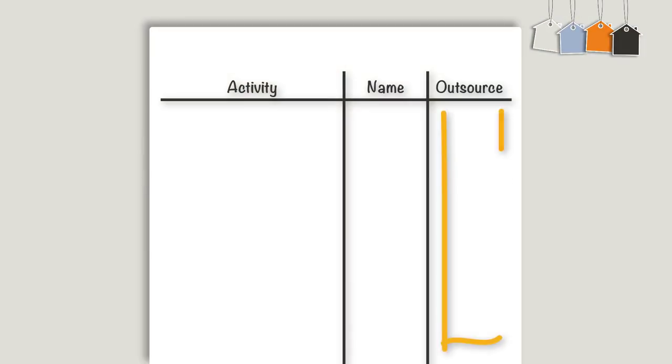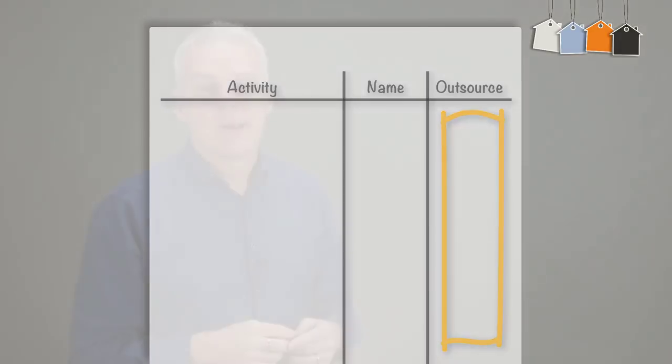And lastly, in the outsource column, pretty obviously, you're going to tick everything else. These are the activities that you should be trying to outsource, if at all possible. By the way, if you're finding this video helpful, I would love it if you could just quickly click on that like button down there. It really helps me if that's okay.